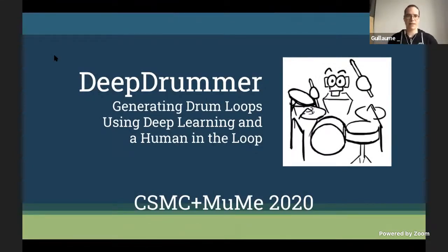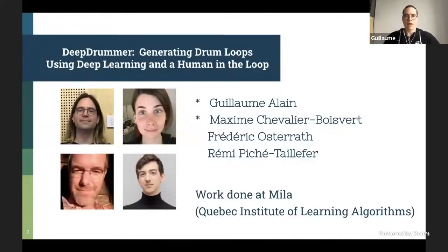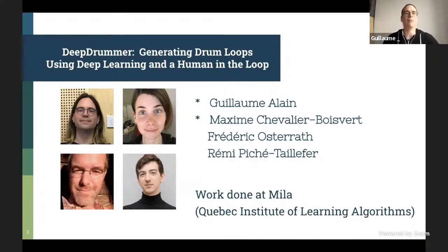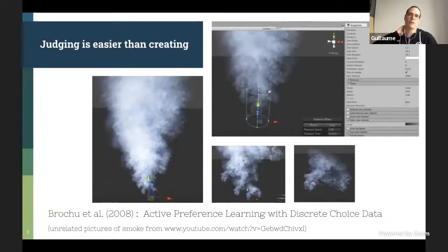Hi everyone. My name is Guillaume Alain and I'm going to present our paper called Deep Drummer: Generating Drum Loops Using Deep Learning and Human in the Loop. This is work by four of us at Mila, the Quebec Institute of Learning Algorithms — also known as Yoshua Bengio's lab. We started this project with the intention of writing something that composes electronic music, but we ended up in a different place. Part of the inspiration came from a paper I read 10 years ago.